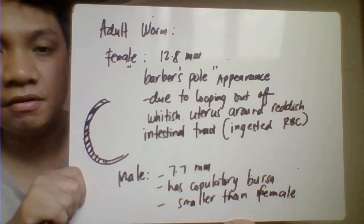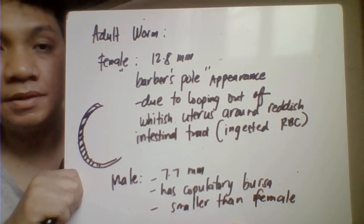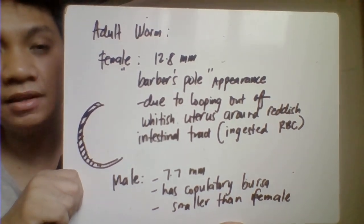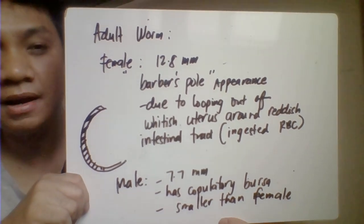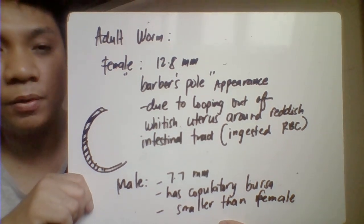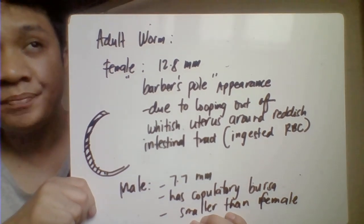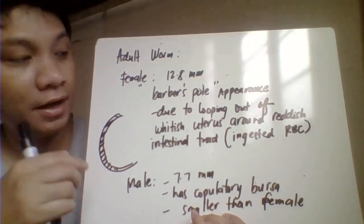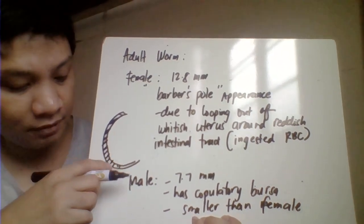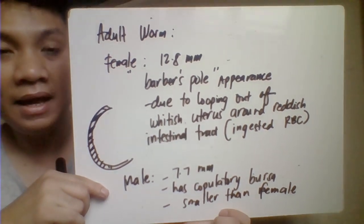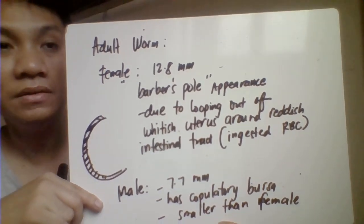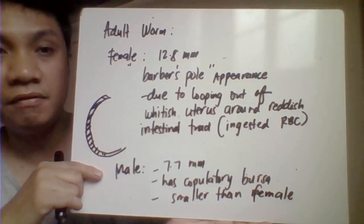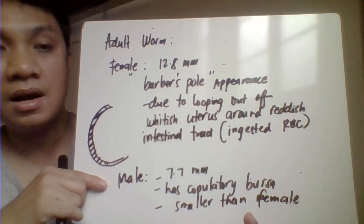For morphology of the adult worm, the female has a barber's pole appearance due to the white looping uterus overlapping with the red intestinal tract, which is red because it ingests blood. The male adult worm is much shorter compared to the female and has a copulatory bursa.